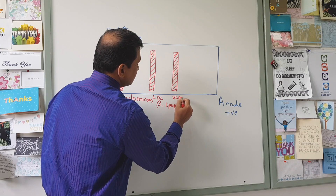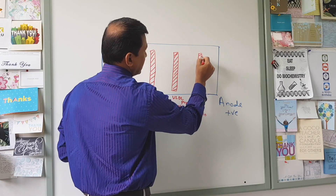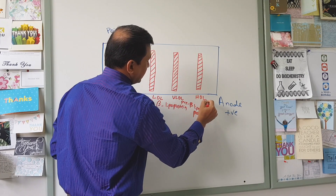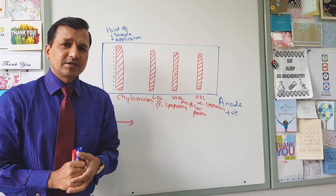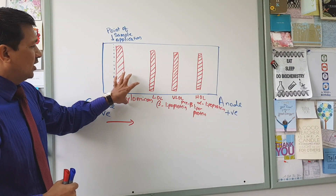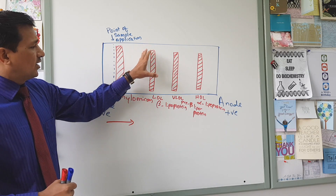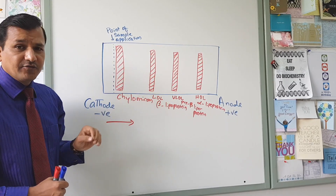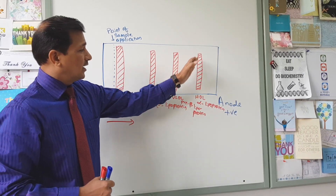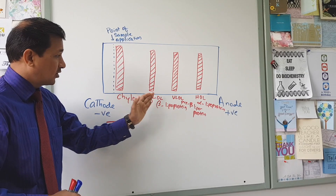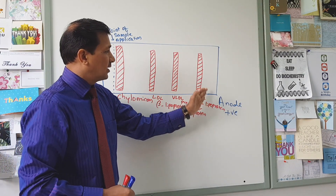VLDL is referred to as pre-beta lipoprotein. HDL moves all the way towards the anode and is referred to as alpha lipoprotein. So in summary: chylomicrons are near the cathode at the point of application, then LDL as beta lipoprotein, then VLDL as pre-beta lipoprotein, and finally HDL as alpha lipoprotein moving furthest towards the anode.